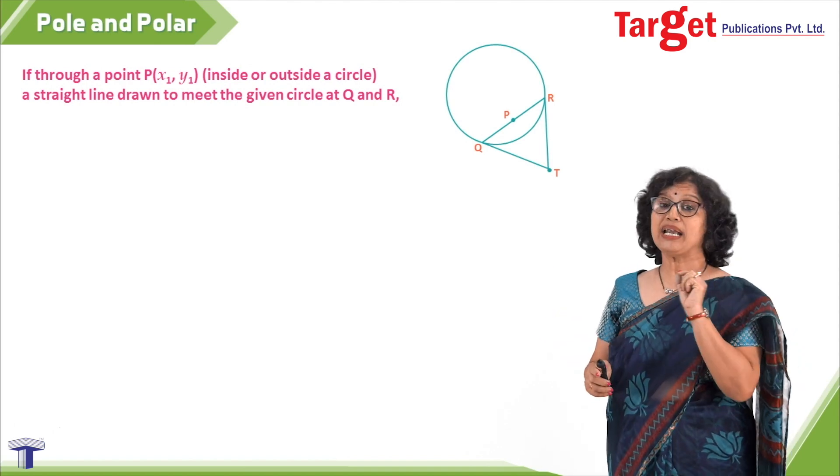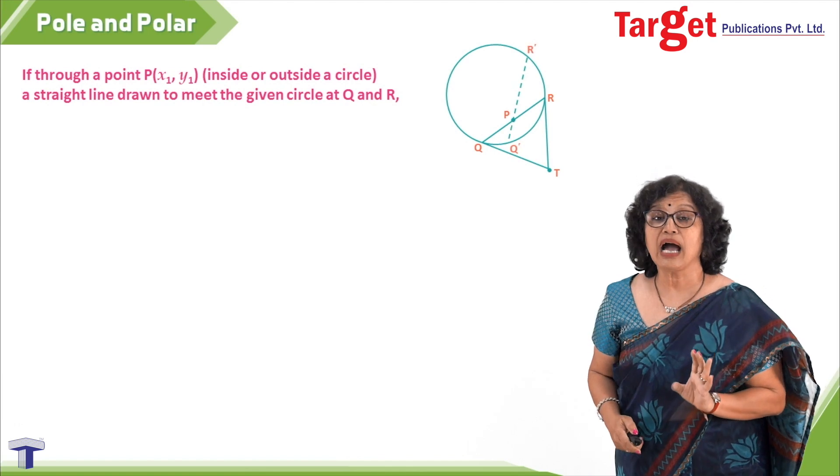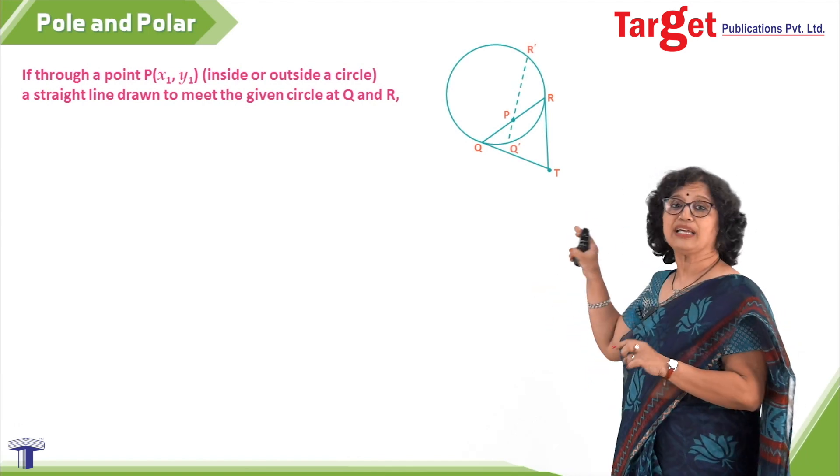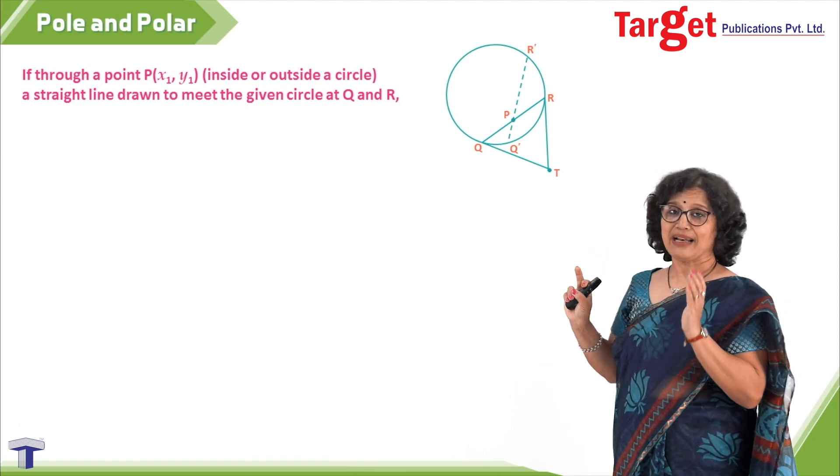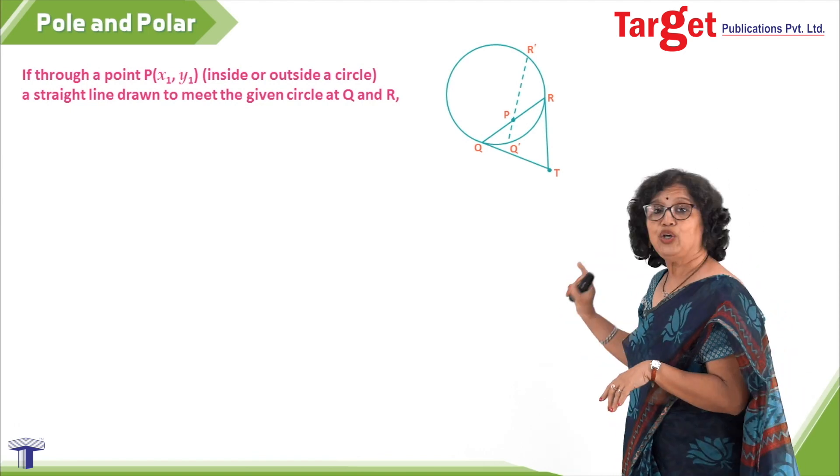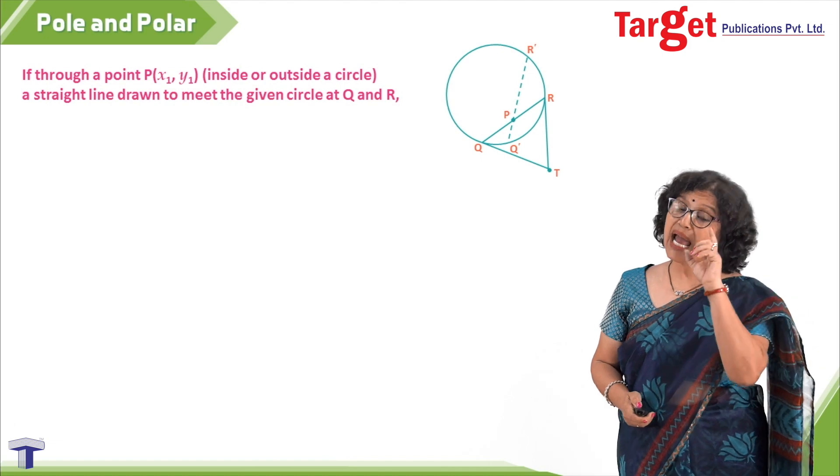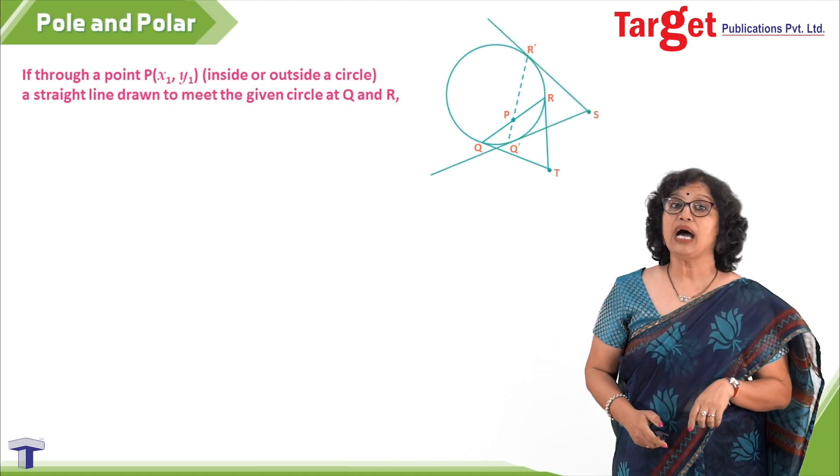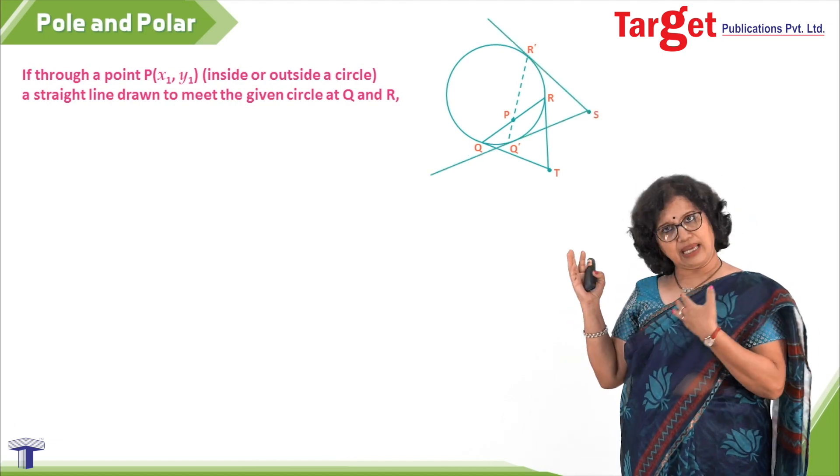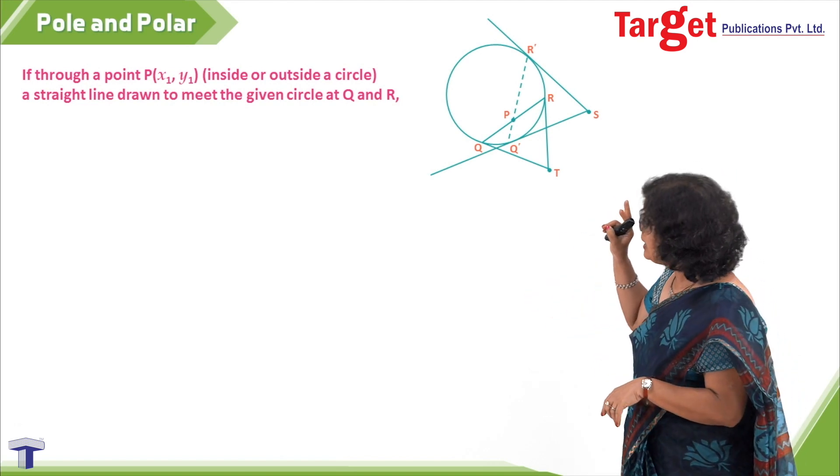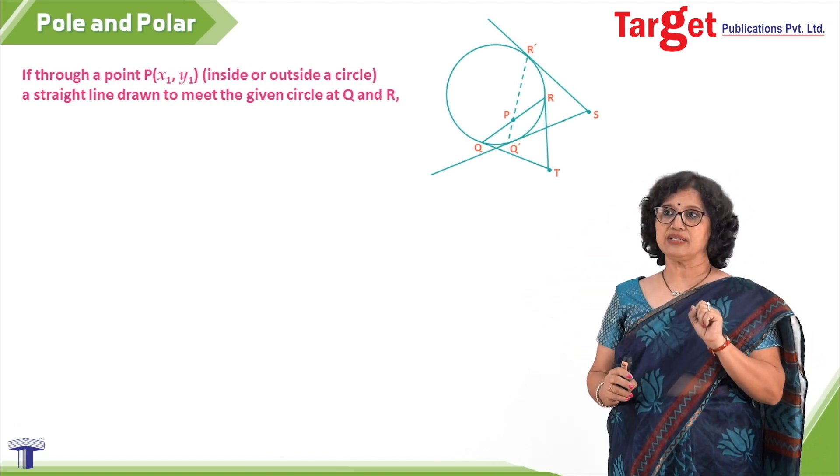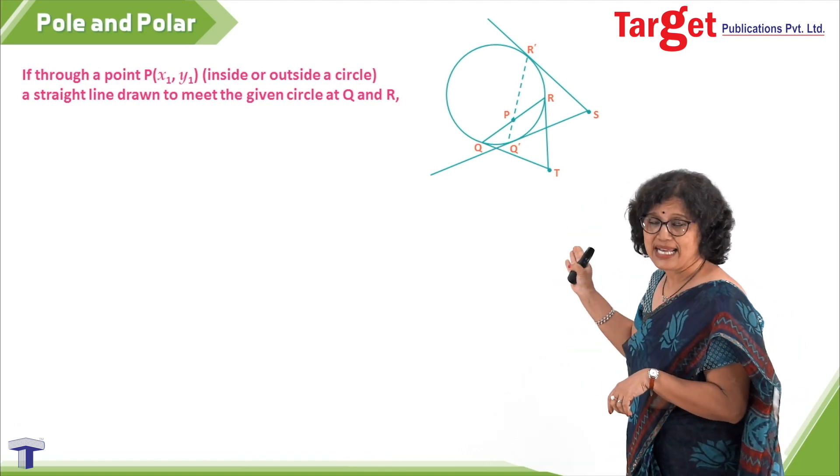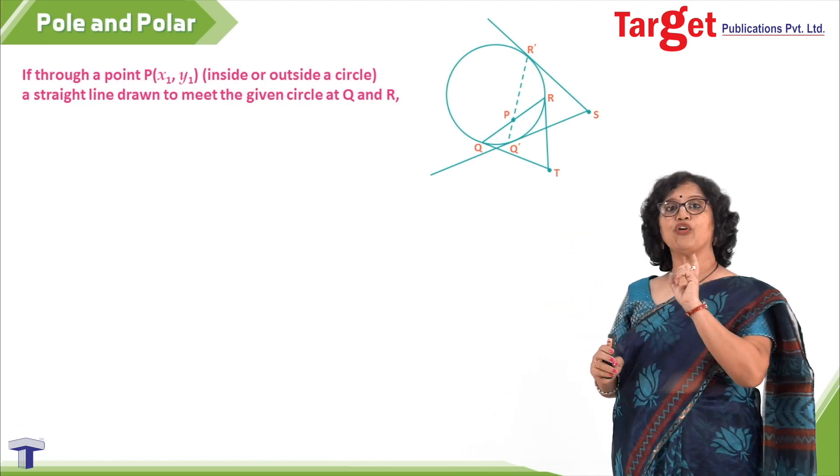I could have drawn a line through P something like this also, where I am naming endpoints where that line meets the circle as Q' and R'. At Q' and R' also I could have drawn tangents, and the point of intersection of those two tangents is S, which is different from position T.